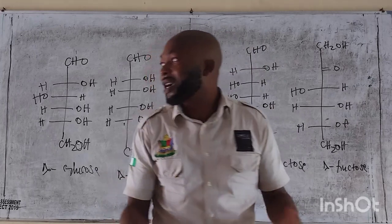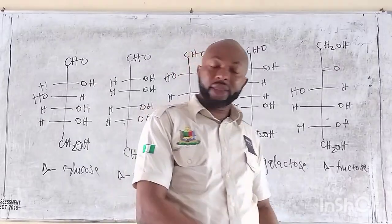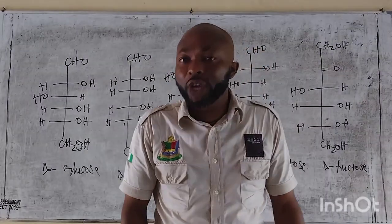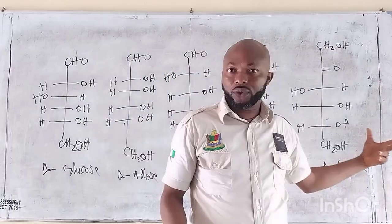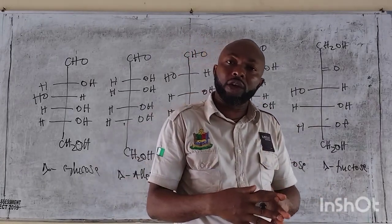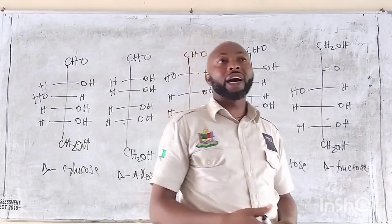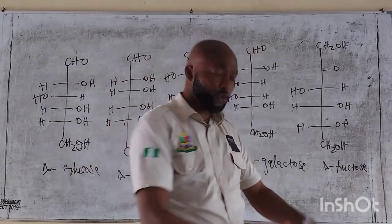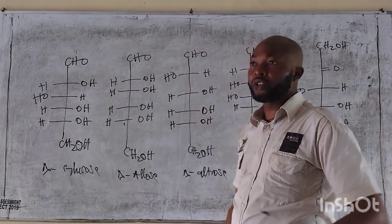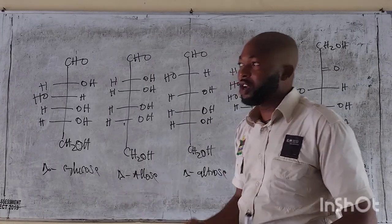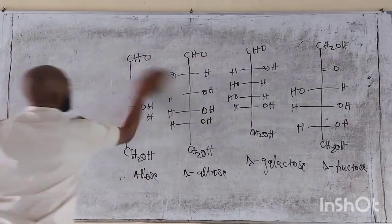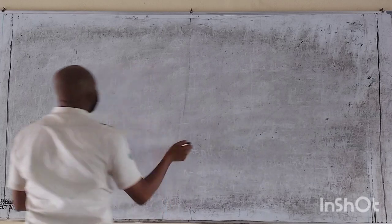Now we have the disaccharide. Disaccharides are sugars that contain two molecules of monosaccharide — which means two molecules of monosaccharide combine within themselves to give us one disaccharide, and we can hydrolyze it, break it down back to the monosaccharide. Let's go to the disaccharide and see practical examples of how we can bond the monosaccharides together.